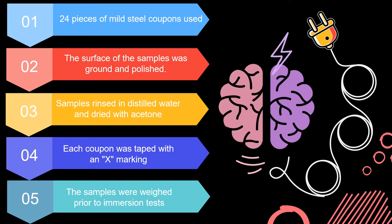Then, each coupon was taped with an X marking on one of its surfaces and dried for a day. The samples were weighed prior to the immersion test in order to monitor weight loss. On average, each coupon weighed approximately 260 grams.